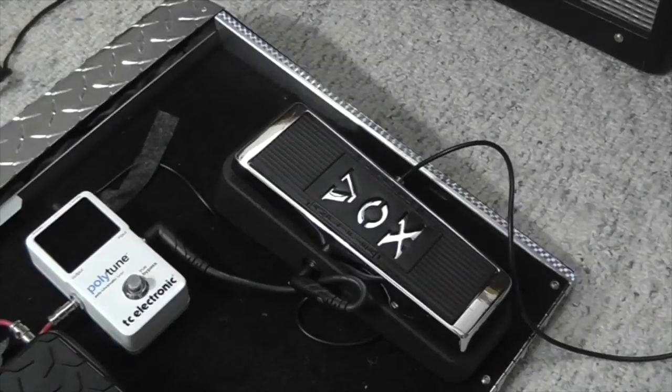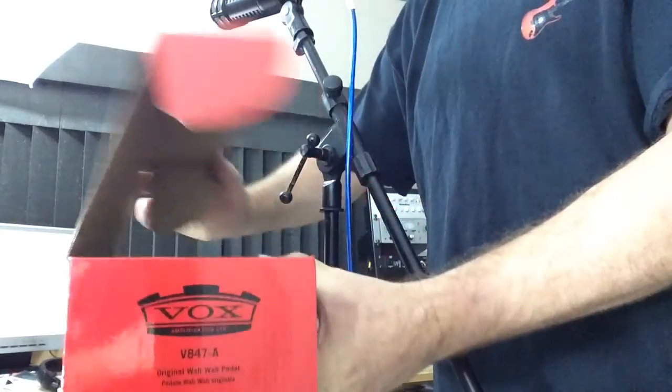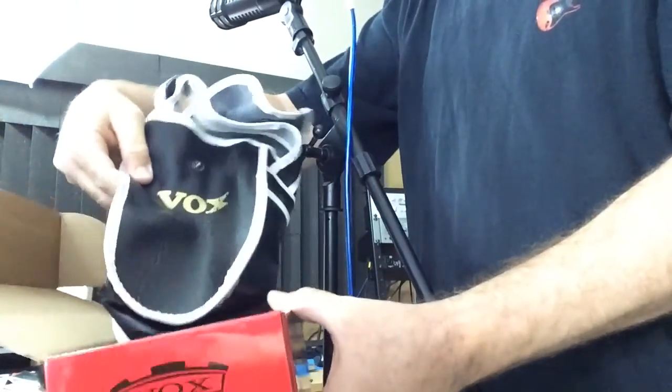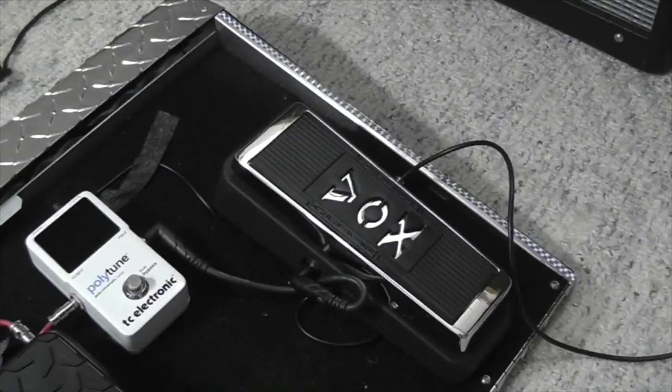We're looking at the Vox V847. It comes with a nifty looking box and a little sleeve to put your pedal in. Not sure what that's all about, but it does look kind of cool. But what does it sound like?